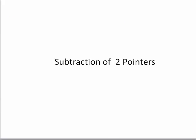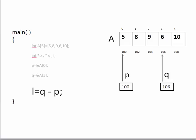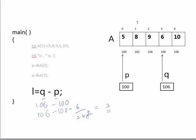The next operation is subtracting two pointers. If P and Q are pointing at two different locations — say 100 and 106 — if you subtract them, 106 minus 100 gives 6. This 6 is 6 bytes, which doesn't make direct sense, but since integer size is 2 bytes, if you divide by 2 you get 3. So 3 is the number of elements between them — Q is three elements away from P. Subtracting two pointers gives the number of elements in between.